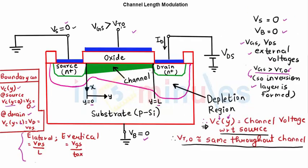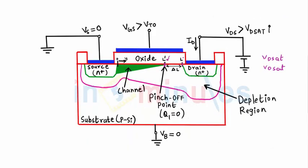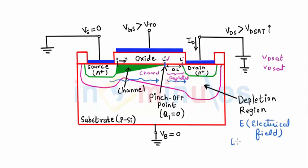Initially the channel was present completely. Now the channel pinches off and extends only up to L'. The part beyond the pinch-off point is depleted — a depletion region is formed because there is no charge and no channel present; we saw Q equals 0 there. The voltage of the channel at L' is VDSat. Electrons can still flow from source through the channel, and they traverse the depleted region due to the lateral electric field generated there.